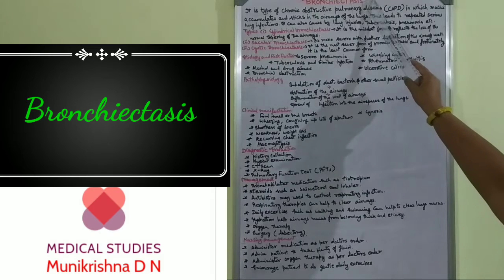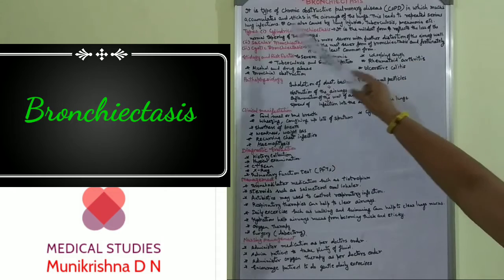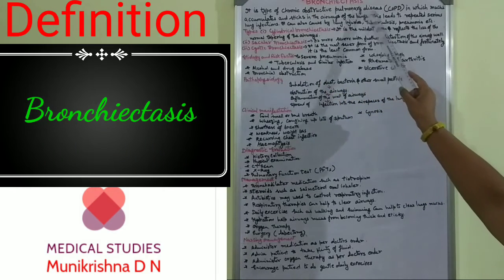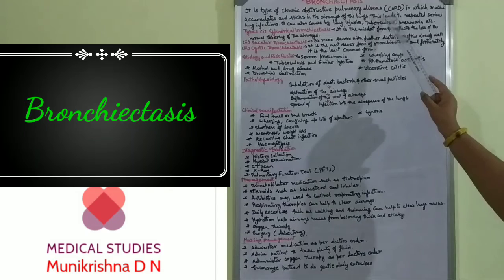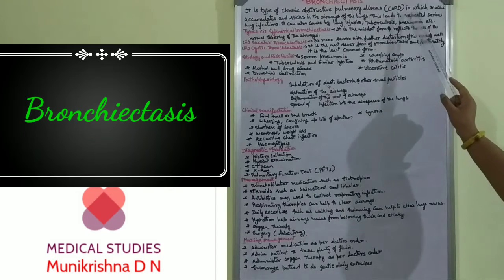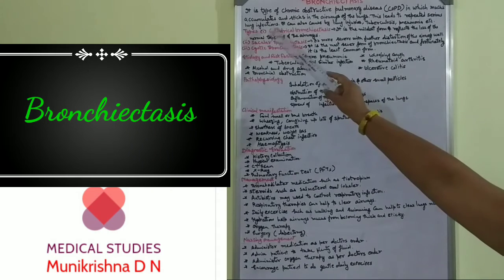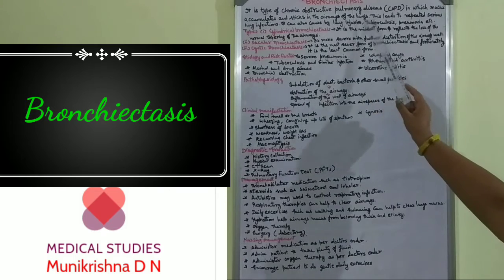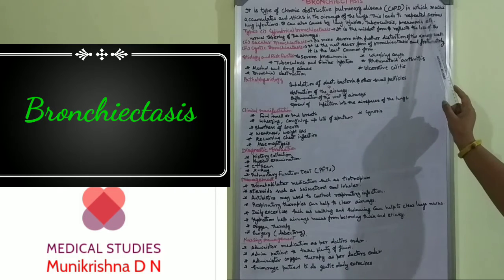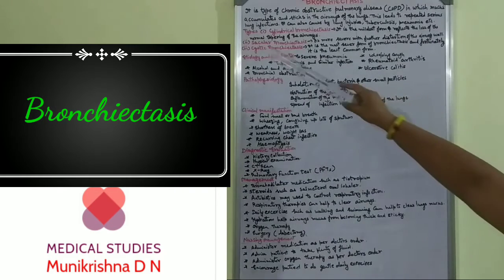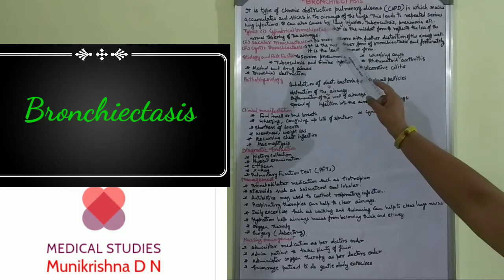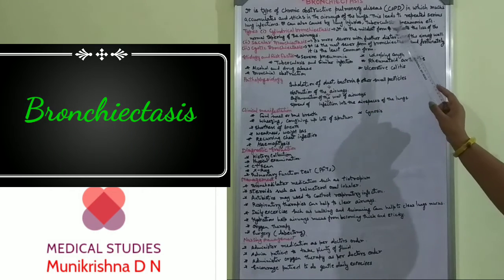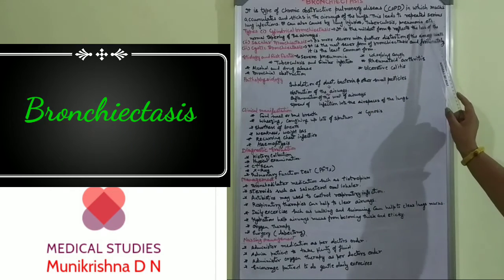To discuss bronchiectasis: it is a type of chronic obstructive pulmonary disease, also expressed as COPD, in which mucus accumulates and sticks in the airways of the lungs. This leads to repeated serious lung infections. It can also be caused by lung injuries, tuberculosis, pneumonia, etc.